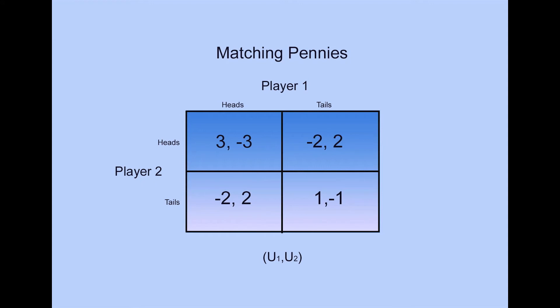For each of the non-matching combinations, heads tails or tails heads, player 1 gets negative 2 and player 2 gets 2. Please refer to the accompanying diagram.